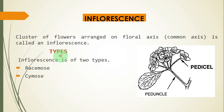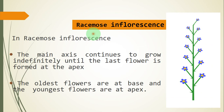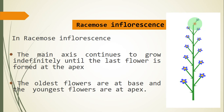In this lecture we will cover a few types of racimose inflorescence. Racimose inflorescences are those in which the main axis continues to grow indefinitely until the last flower is formed at the apex. The oldest flower will be towards the base and the youngest flower towards the apex. As flowers keep producing, their size keeps reducing.